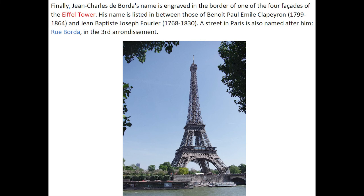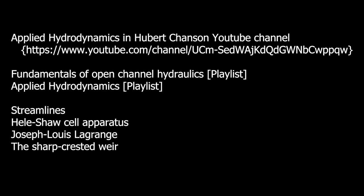Finally, Jean-Charles de Borda's name is engraved in the border of one of the four facades of the Eiffel Tower. His name is listed between those of Benoit Clapeyron and Jean-Baptiste Fourier. A street in Paris is also named after him, Rue Borda, in the 3rd arrondissement.